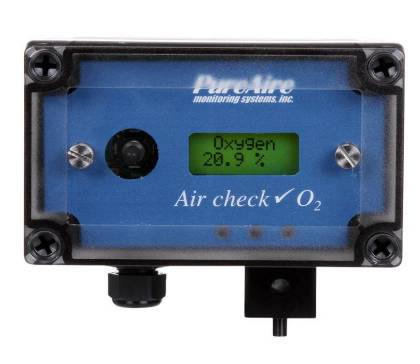All gas detectors must be calibrated on a schedule. Of the two form factors of gas detectors, portables must be calibrated more frequently due to the regular changes in environment they experience. A typical calibration schedule for a fixed system may be quarterly, biannually or even annually with more robust units. A typical calibration schedule for a portable gas detector is a daily bump test accompanied by a monthly calibration. Almost every portable gas detector requires a specific calibration gas which is available from the manufacturer. In the US, the Occupational Safety and Health Administration may set minimum standards for periodic recalibration.